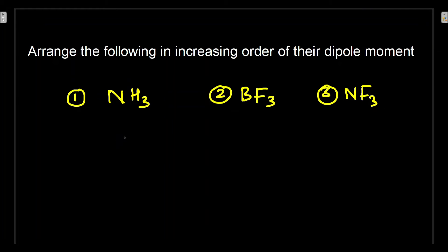NH3: for these kind of questions, first draw the structures. Don't forget to include the lone pair of electrons. We know that NH3 has a tetrahedral geometry, but the molecule has pyramidal shape like this due to the effect of lone pair.